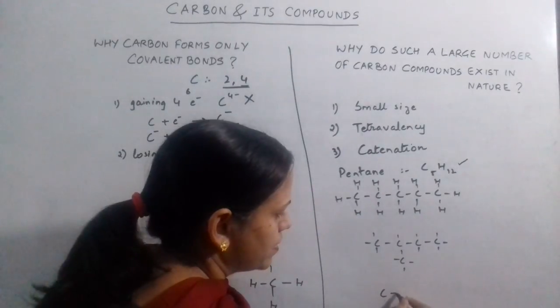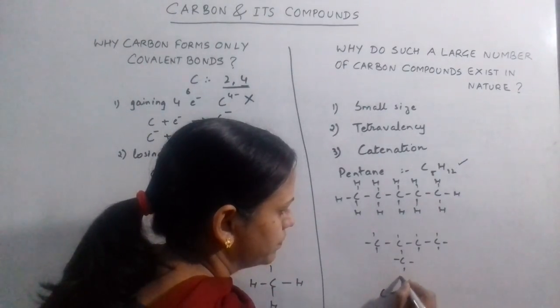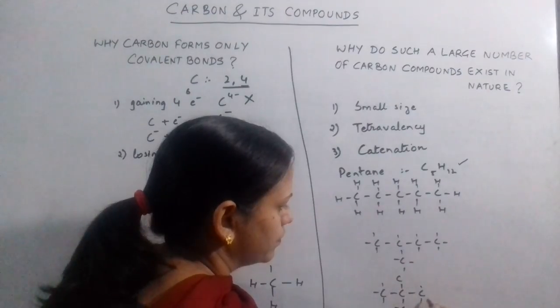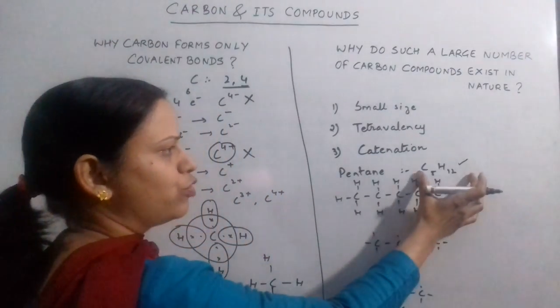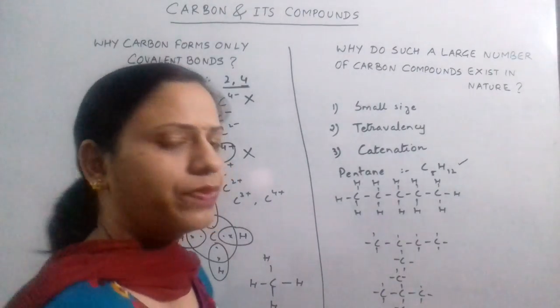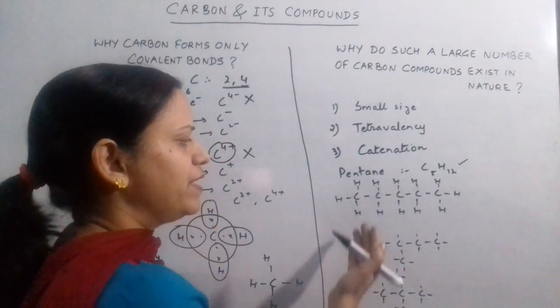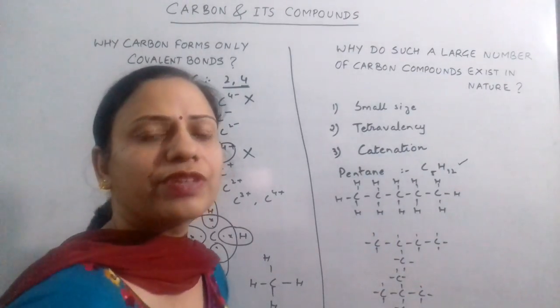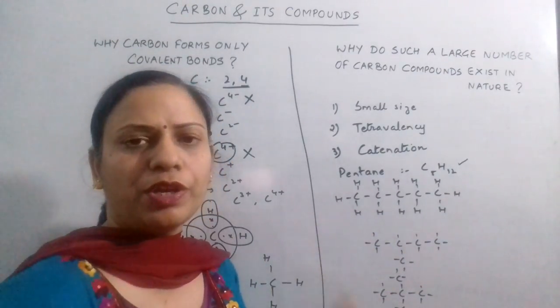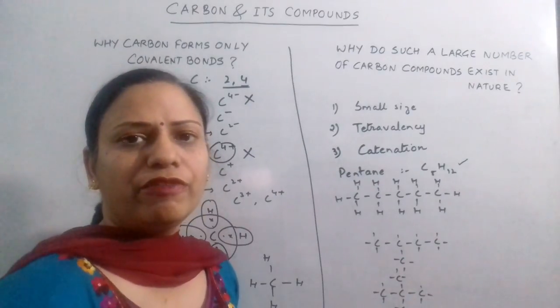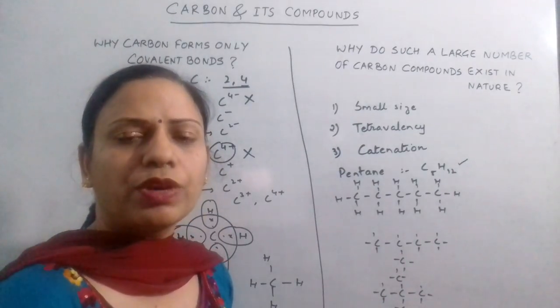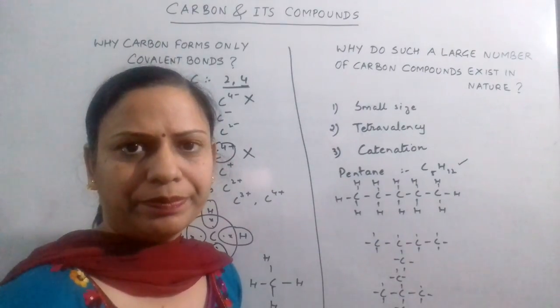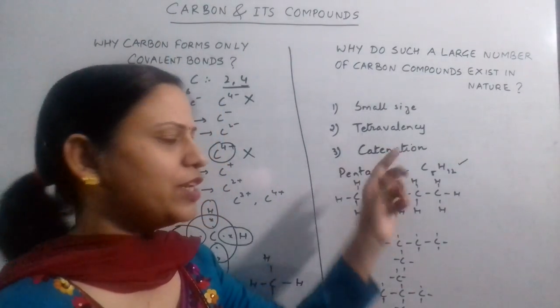Another way it can be arranged is like this. In this case also, the molecular formula comes out to be C5H12 only. In the case of pentane, we can see that one molecular formula can be represented by three different structures. Since pentane is a very small molecule, you can imagine carbon forms compounds having 100 or even more atoms. How many different arrangements can be possible for them?